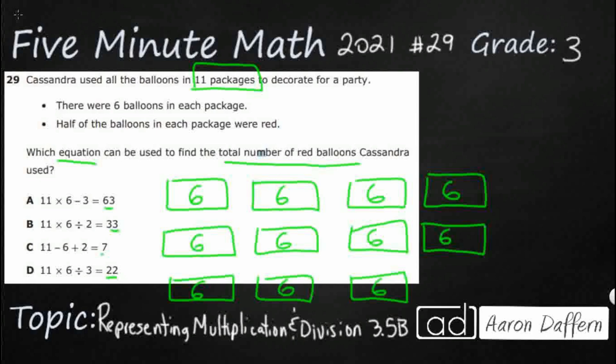But here's where it gets kind of interesting. Half of the balloons in each package were red. So I'm just going to kind of do this. I'm going to draw a line down there. I'm just going to say that half is red. I'm just going to kind of draw a line and shade. We don't know what the other color is.